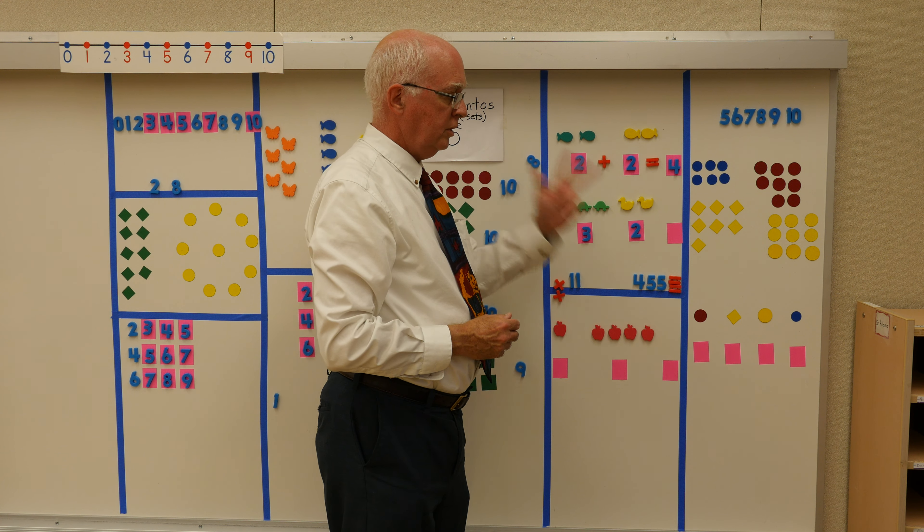Más abajo, yo tengo otro problema de sumar. I have another problem with addition. Yo tengo una manzana, y ahora yo tengo cuatro manzanas. Yo voy a sumar, a unir — put together. Uno más cuatro es igual a uno, dos, tres, cuatro, cinco. Muy bien.